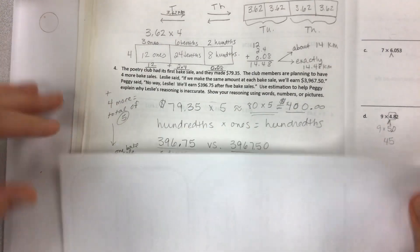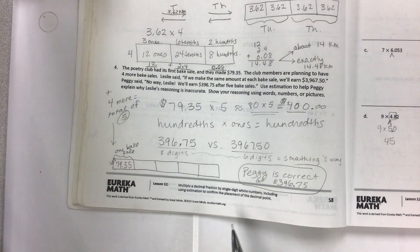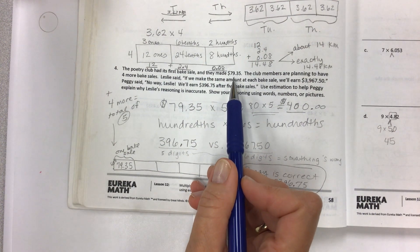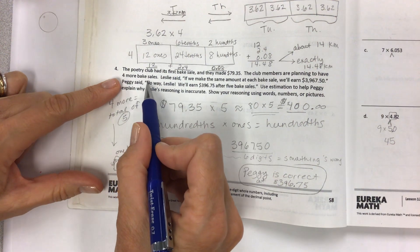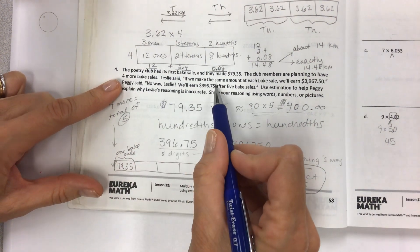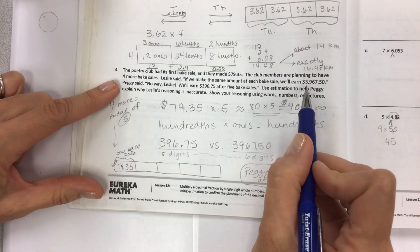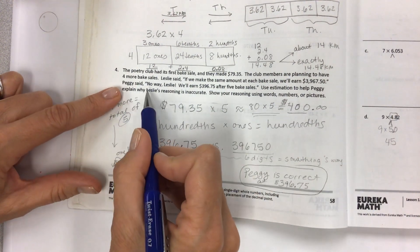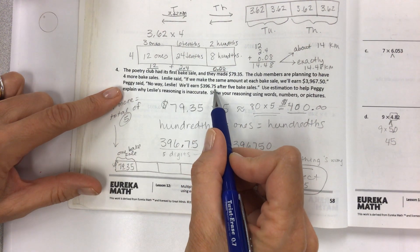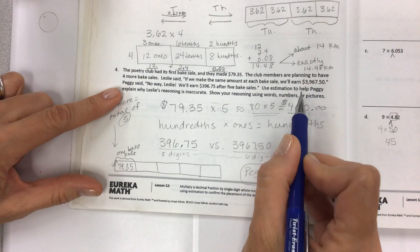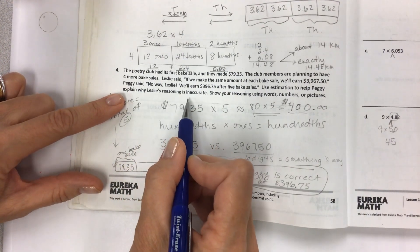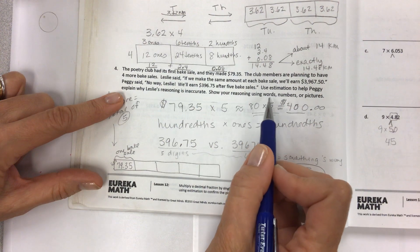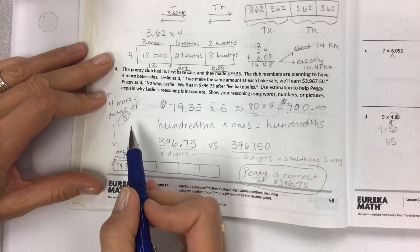Finally, the poetry club had its first bake sale. And they made a profit. Look at that. $79.35. The club members are planning to have four more bake sales. Right on. Leslie said, if we make the same amount at each bake sale, we'll earn $3,967.50. Woohoo! Wow, that's a lot of money. Peggy said, no way, Leslie. We'll earn $396.75 after five bake sales. Use estimation to help Peggy explain why Leslie's reasoning is inaccurate. Well, you just look at that and go, wow, how did it get so big? Show your reasoning using words, numbers, or pictures.